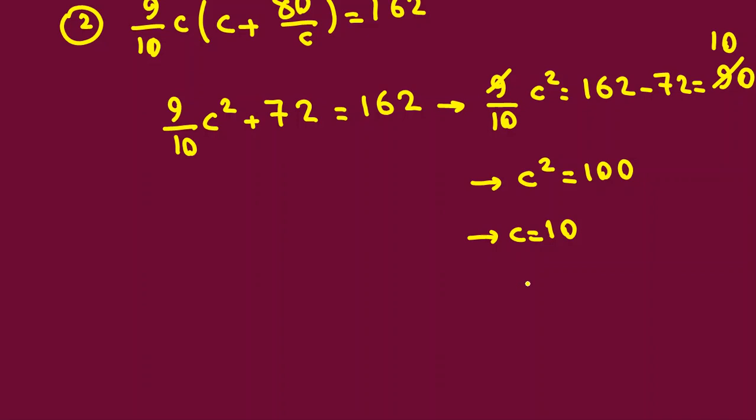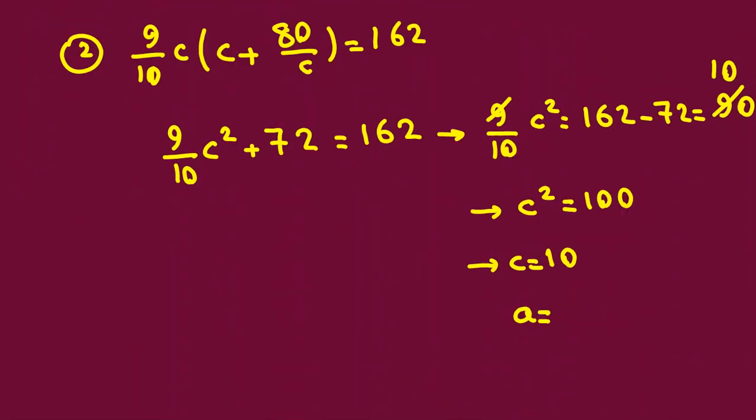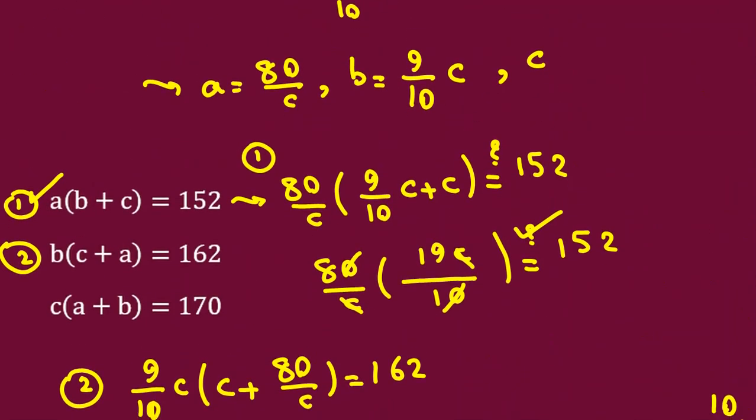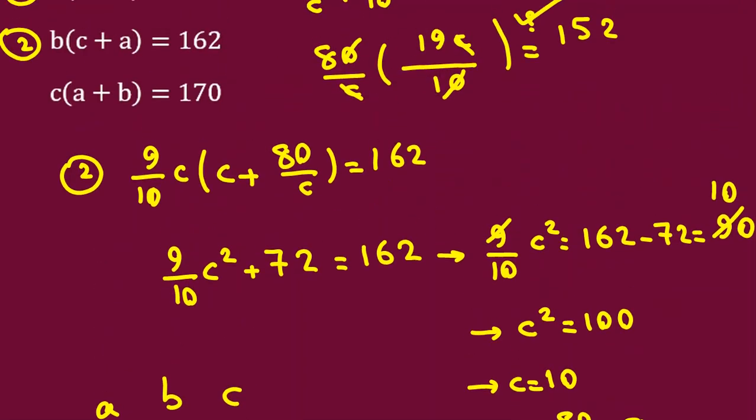So c equal to 10. And let's find a equal to what? A equal to 80 over c. 80 over c will be 80 over 10, it's 8. B is what? B is 9 over 10c. B is 9 over 10c, c is 10, so it will be 9. So we proved that our a, b, c are what? A is 8, b is 9, c is 10.